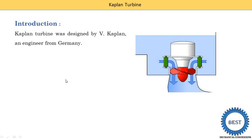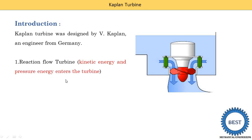Here I discuss these five points. First point: according to the energy inlet, any turbine is classified as impulse or reaction turbine. This Kaplan turbine is a reaction turbine, meaning kinetic energy and pressure energy both are supplied at the inlet of the turbine. This is the casing of a Kaplan turbine — water enters from these sides, and at the inlet of this casing the water has both kinetic as well as pressure energy.